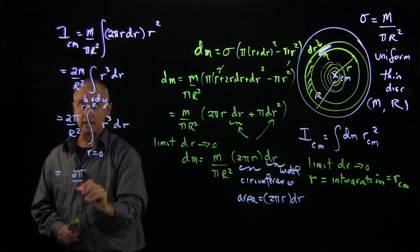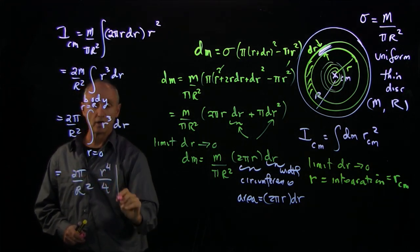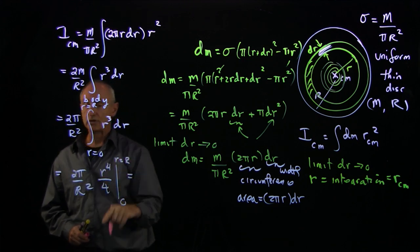And our integration variable r³ dr. Now this is an integral that's easy to do. That's r to the fourth over 4 between 0 and r equals R.